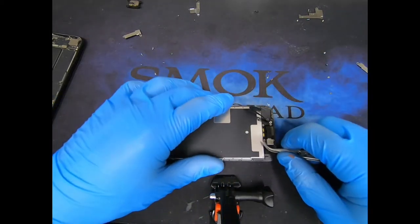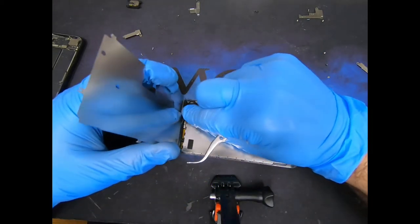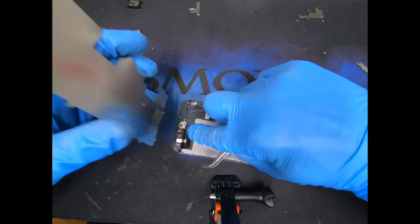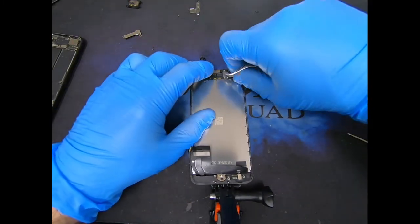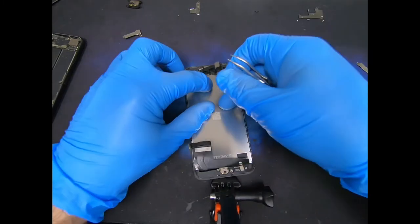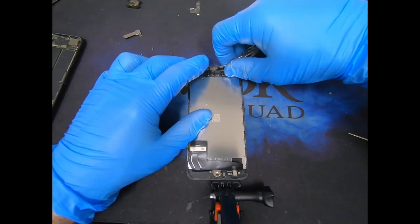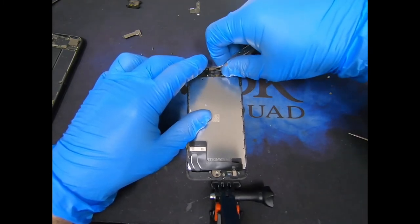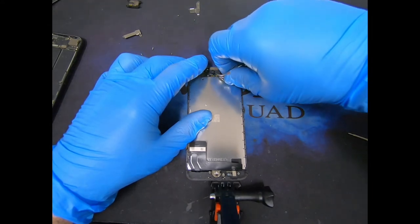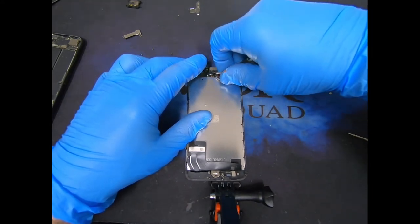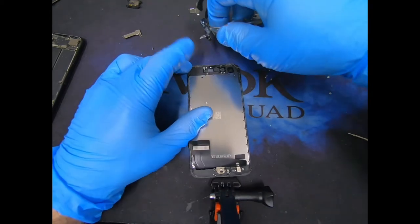We're going to gently remove the proximity sensor. Next we're going to remove this metal plate. This does have some adhesive on the bottom, so just gently peel it off. Remove the camera bracket. We're going to gently remove the proximity sensor and the front camera flex. Just gently go underneath. That's it.